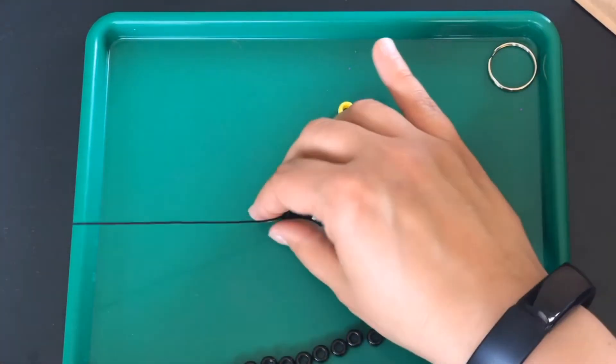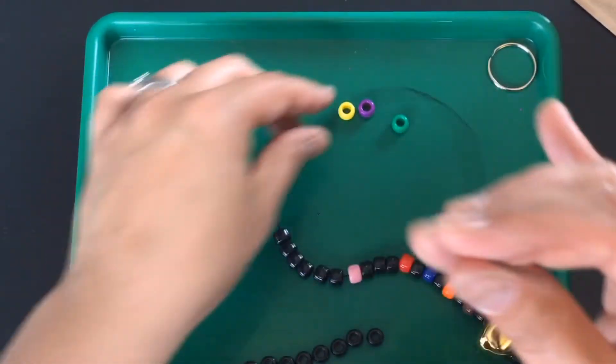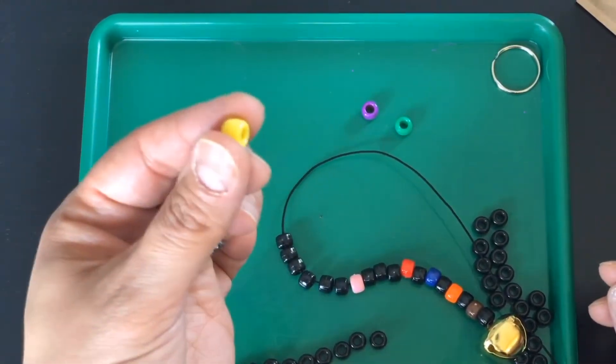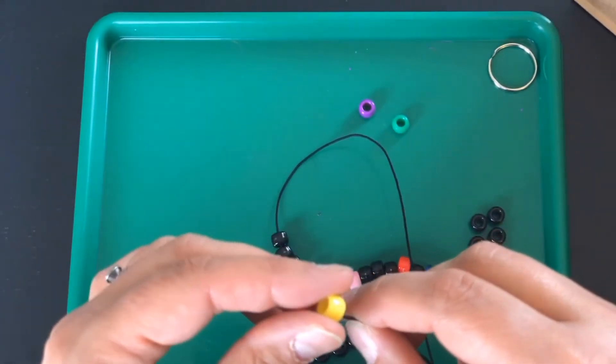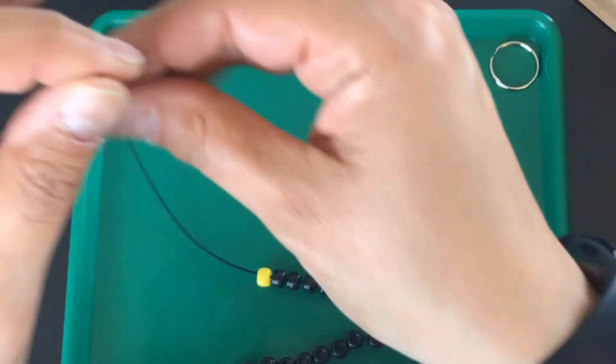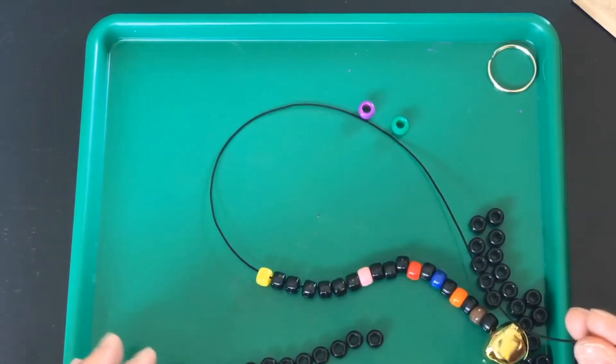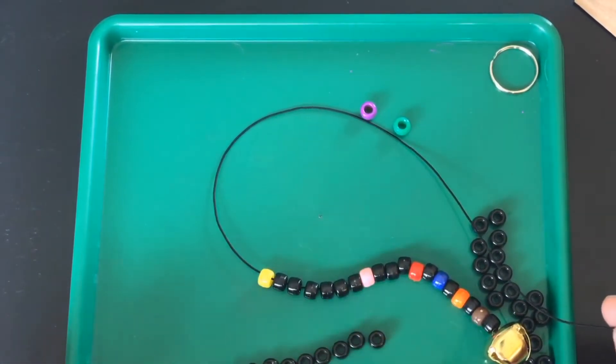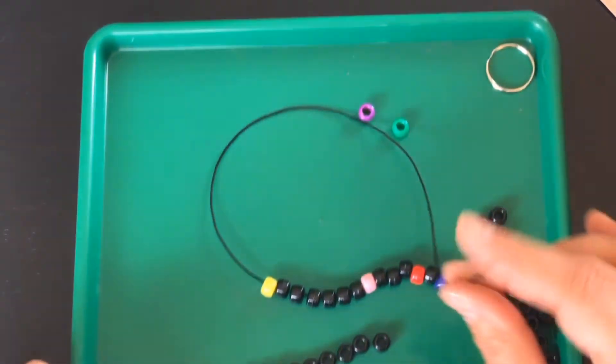There we go. And then next is the yellow bead and the yellow bead represents Saturn. So here comes Saturn. Then after Saturn you are going to put 12 black beads.